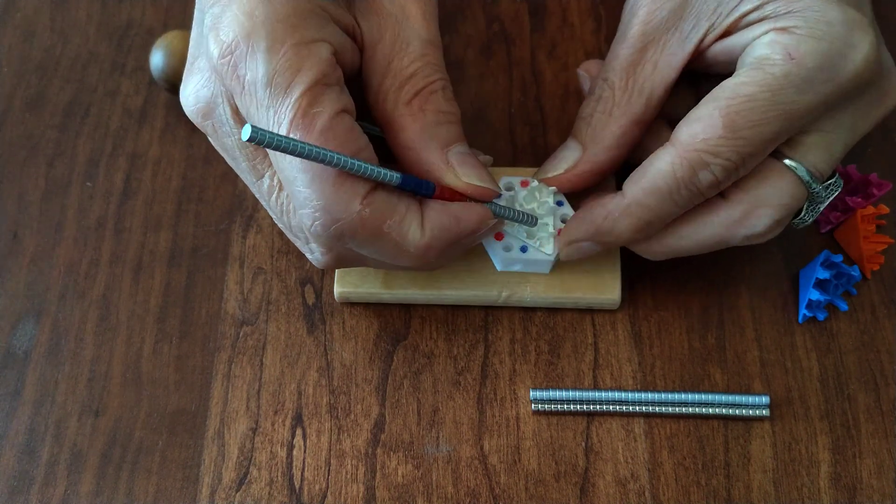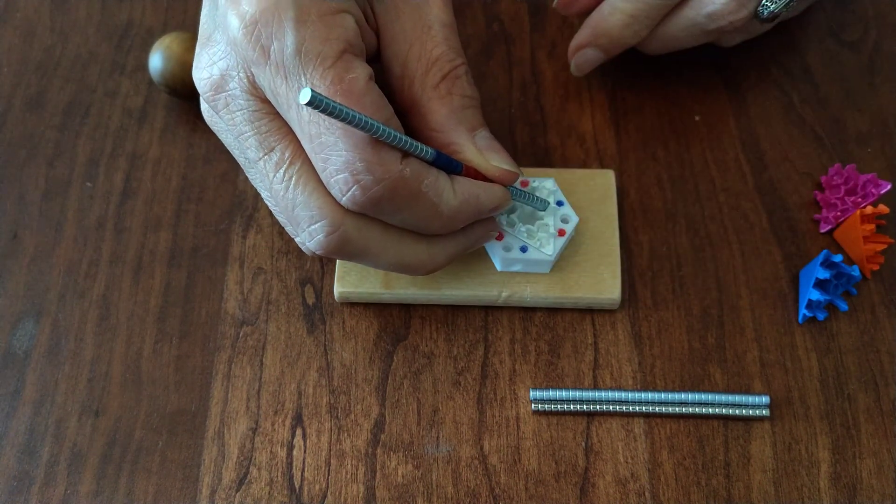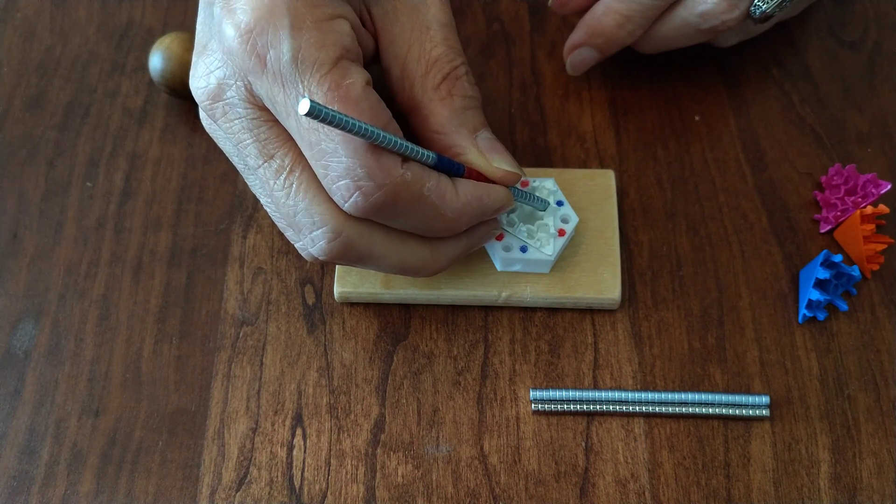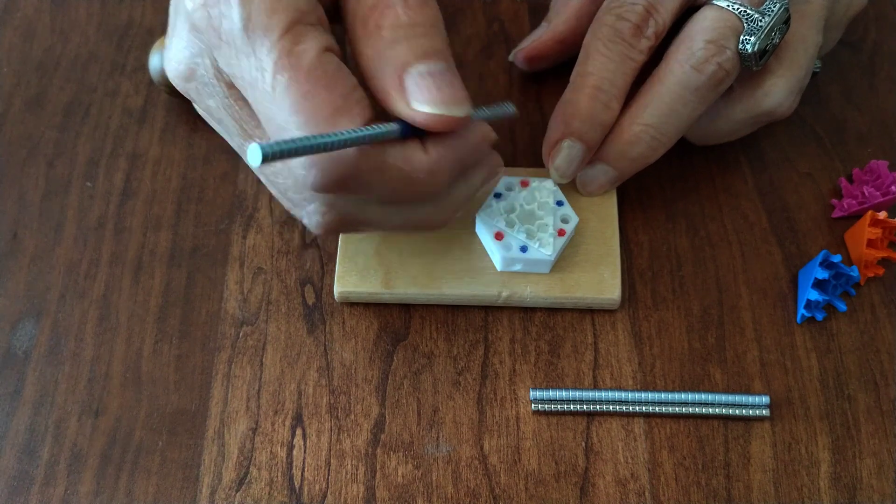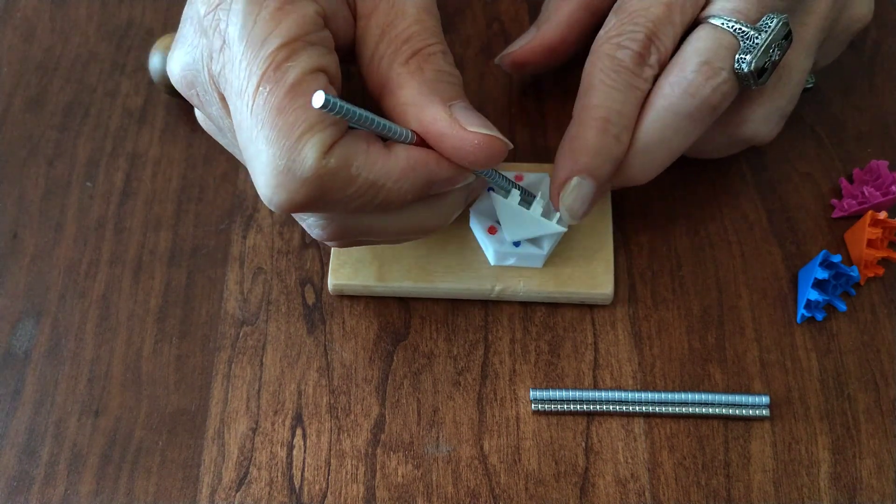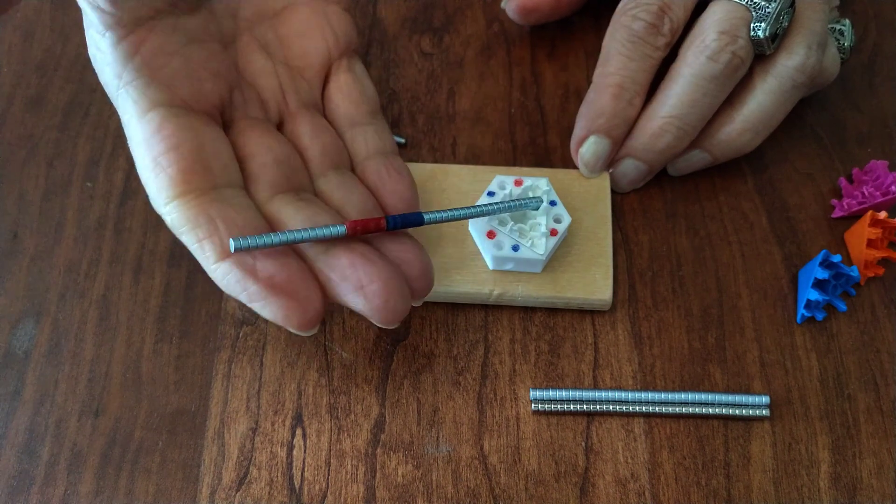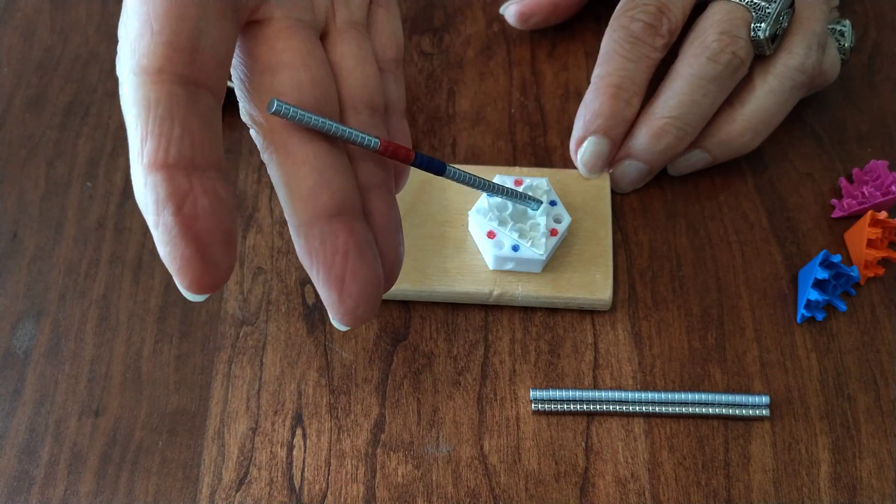If you really insist on getting it the wrong way around it's possible to do that, but if you just sort of relax your grip before you put it in then the magnets will jump out if they're wrong. This is the correct way and you see it's quite happy.